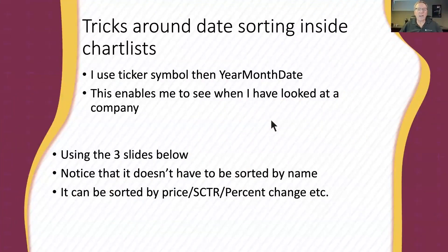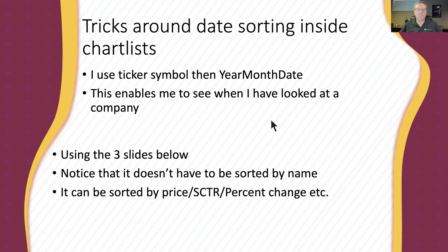Tricks around date sorting inside chart lists: I use a ticker symbol and then the year, month, and date in that order. This lets me see when I last looked at the company. For example, if I go check on Apple, I want to know the last time I looked at or annotated the chart. I have a working chart list where anytime I want to check a chart, I dump it in — it's right at the top of all my work. By putting in the ticker symbol and the year-month-date, it's really helpful as you go forward.